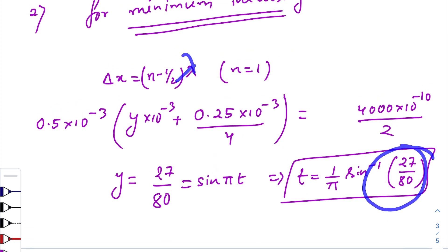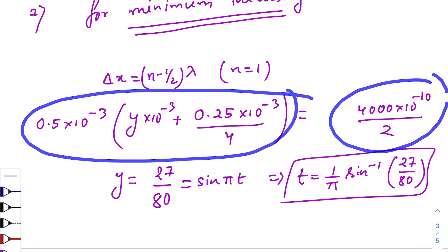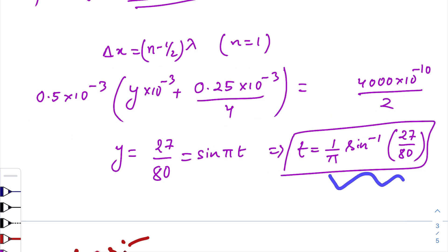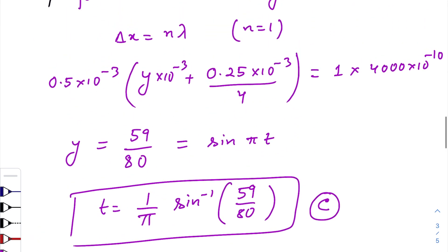Now we got this one. So just use the path difference formula and equals to lambda by 2. Just calculating it, we get t equals to this time. So after this time, we'll get the minimum intensity for the first time. Now if you see that your answer is not matching, then multiply it with 3, 5, 7 or like that.